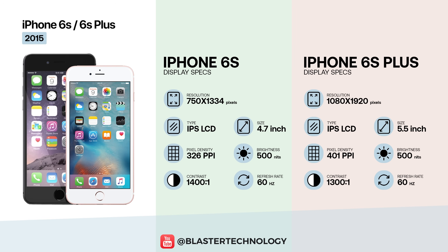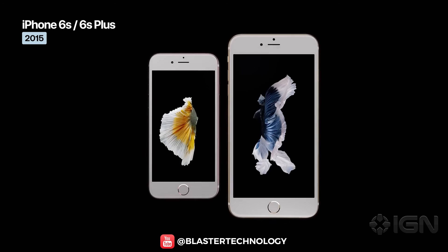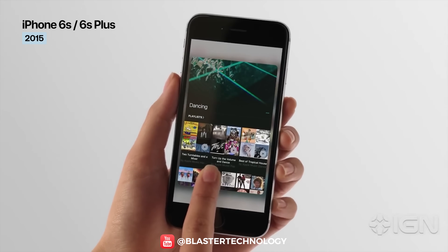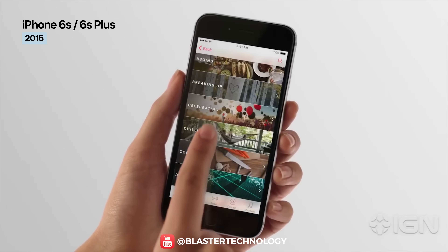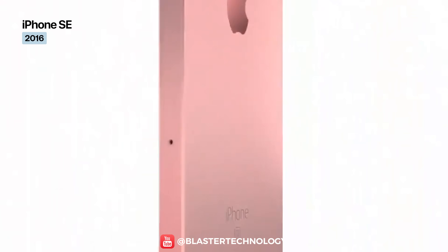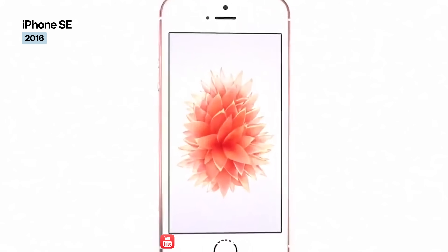The iPhone 6s and 6s Plus keep the same base display specifications, but introduce two key improvements: support for a wider color gamut with richer, more saturated colors, and for the first time, 3D Touch. The iPhone SE uses a 4-inch IPS LCD with a resolution of 640 x 1136 and a density of 326 ppi, inherited directly from the iPhone 5s.